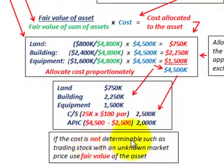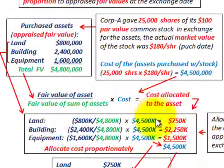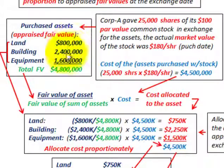If the cost cannot be determined — for example, if you're trading stock with an unknown market price — you would use the fair value of the assets instead. If we didn't have a known market price on the stock, we would simply allocate costs based on the assets' fair values. This was a simple example showing how to allocate cost and determine cost based on issuing stock in exchange for a basket or lump sum purchase of property, plant, and equipment.